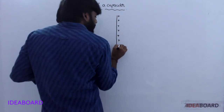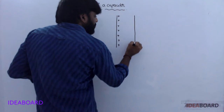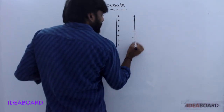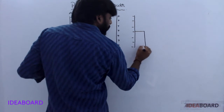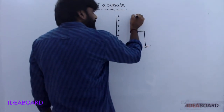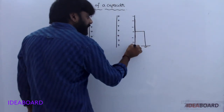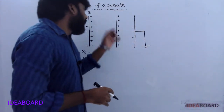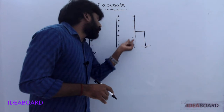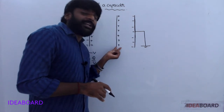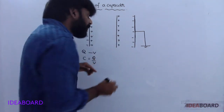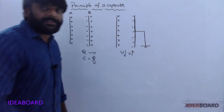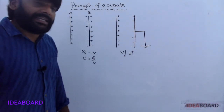In another process, if the second conductor is grounded, the positive charge on its outer side is completely neutralized. Due to the remaining negative induced charge, the potential of the original charged conductor is decreased. If potential is decreased, its capacitance is increased.